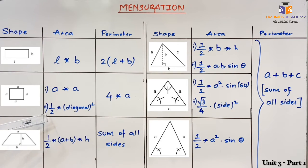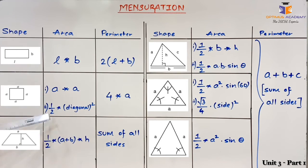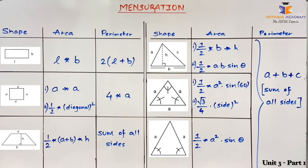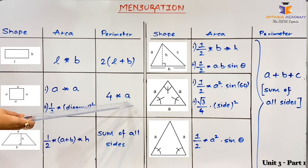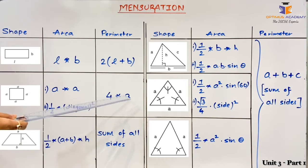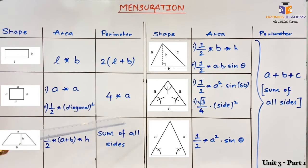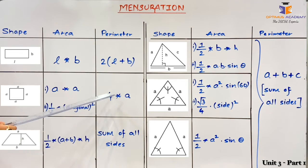There is one more formula for area of a square which is not much discussed — when the sides are not given, we use the formula: half × diagonal². The perimeter of a square is 4 × side, since we add all four sides of the square to get the perimeter.